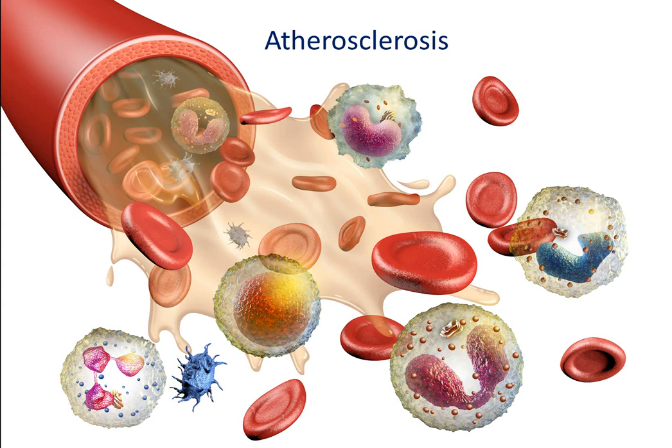Atherosclerosis is the most common type of vascular disease. It starts from the lesion of intima. Generally, there are lipid and complex carbohydrate accumulation, hemorrhage and thrombosis, fibrous tissue hyperplasia and calcinosis, and gradual metamorphosis and calcification of the middle layer of the artery.